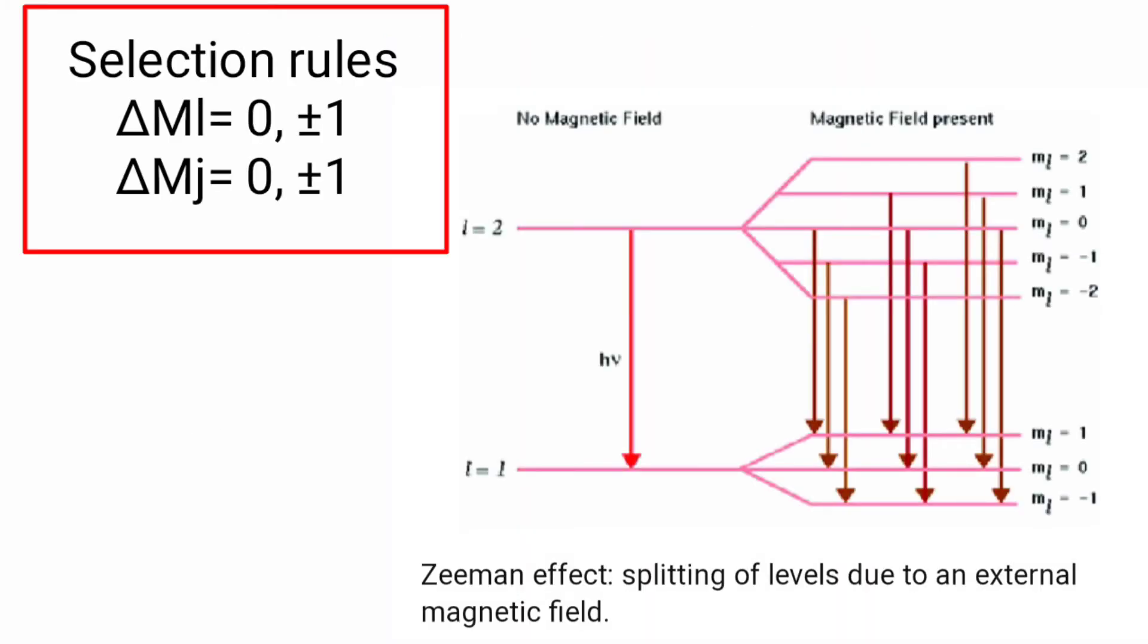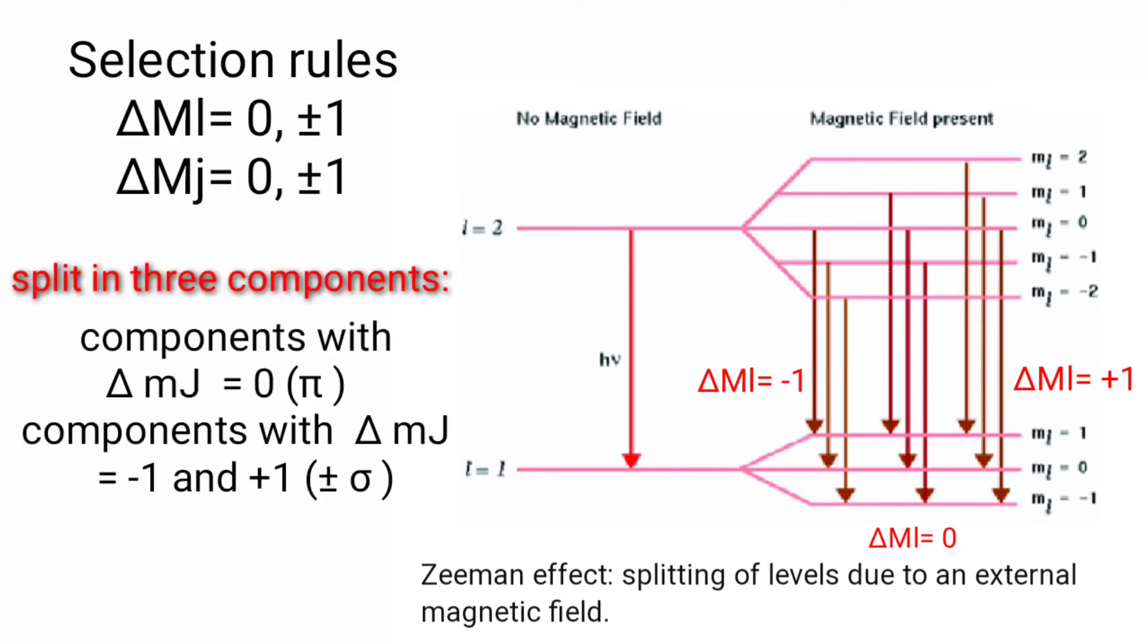Next, we have the selection rule of Zeeman effect. So delta ml should be zero and plus minus one. It means that if ml is 2 and its corresponding to ml is 1, if we calculate the difference between these two, the delta ml is plus 1. It means that this transition will be allowed. So the number of lines will come from this rule. This is split in three components: delta mj equals 0, which is pi component; delta mj equals minus 1, which is minus sigma component; delta mj equals plus 1, which is positive sigma component.